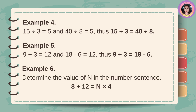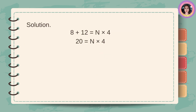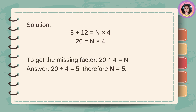Example number 6: Determine the value of n in the number sentence. 8 plus 12 is equal to n times 4. Solution: 8 plus 12 is equal to 20. 20 is equal to n times 4. To get the missing factor, 20 divided by 4 is equal to n. Answer: 20 divided by 4 is equal to 5. Therefore, n is equal to 5.